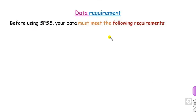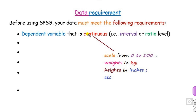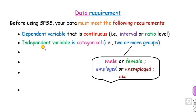Before applying the independent sample T-test in SPSS, you must satisfy the following requirements. First, the dependent variable must be continuous — meaning values like weights in kg, heights in inches, or a scale from 0 to 100. That is interval or ratio level data. On the other hand, the independent or grouping variable must be categorical — such as male or female, employed or unemployed, success or failure — that is, two or more groups.